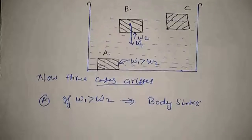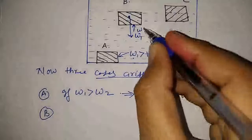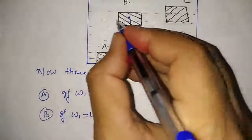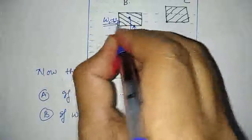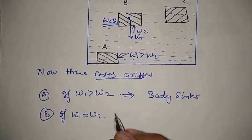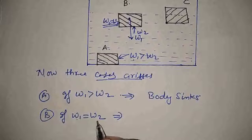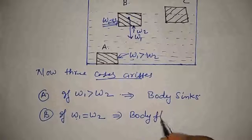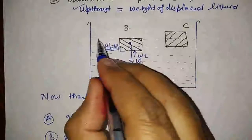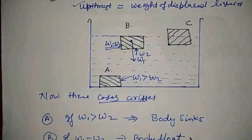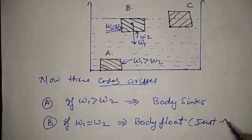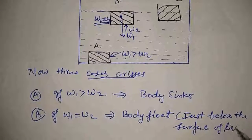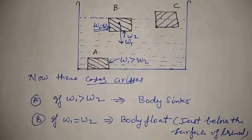The second case is case B: when W1 is equal to W2. Experimentally, it is observed that when the weight of the body equals the thrust acting on the body, the body floats just below the surface of the liquid, as shown in the diagram.